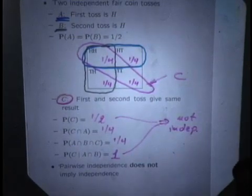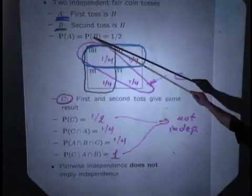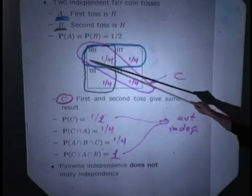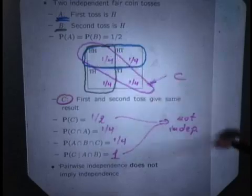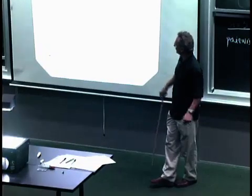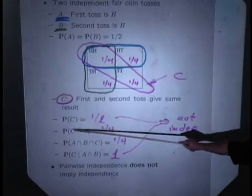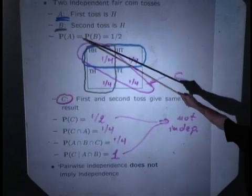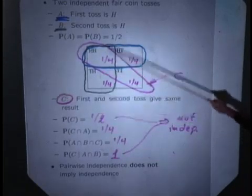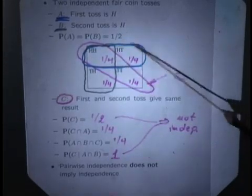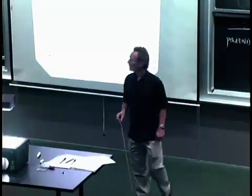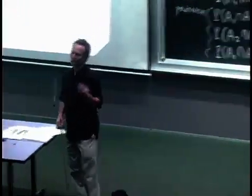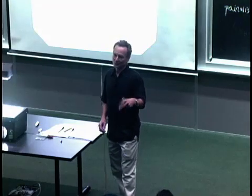But are they pairwise independent? Is A independent from B? Yes, because probability of A times probability of B is 1/4, which equals probability of A intersection B. Is C independent from A? The probability of C and A is 1/4, the probability of C is 1/2, and the probability of A is 1/2 — so it checks: 1/4 equals 1/2 times 1/2. So event C and event A are independent. Knowing that the first toss was heads does not change your beliefs about whether the two tosses are going to have the same outcome or not.